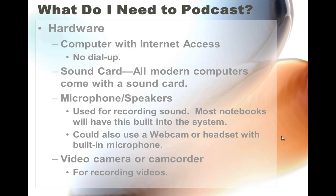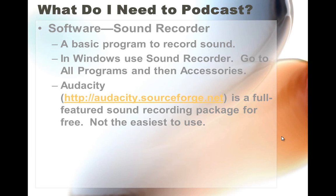If you're going to do videos, you'll obviously need a video camera or a camcorder for recording. As far as software, you'll need software to do the recording, especially if you're doing audio. Obviously, if you're doing a video, your camcorder or a smartphone with video recording can work as well. In Windows, there is software called Sound Recorder — it's really simple and easy to use, so there's no downloading if you have a Windows app.